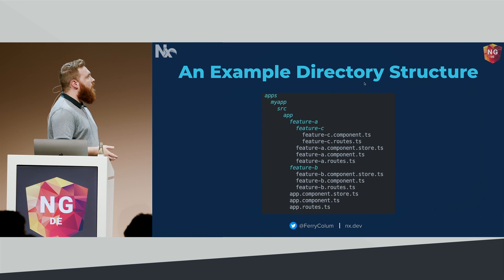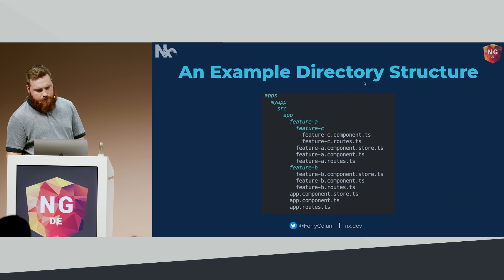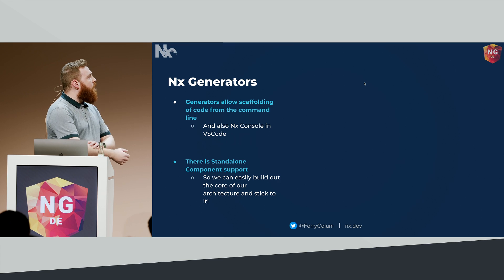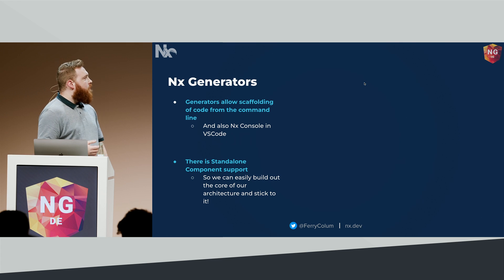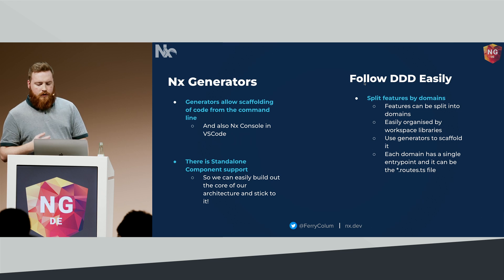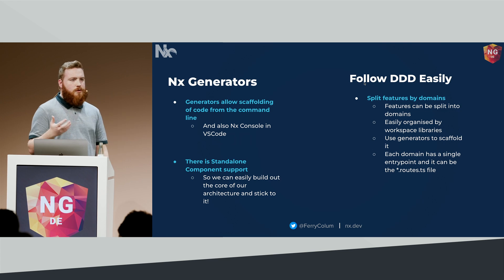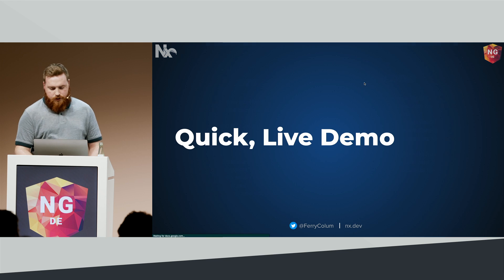Putting all these concepts together, an example directory structure would look like this. Going through your application, it's very straightforward to see how you'd set up your entry component to a feature, the routing throughout your feature, and where the management of data is happening. NX can help with this. NX offers generators that allow scaffolding of code from the command line, or if you prefer a GUI, there's the NX console in VS Code. There's also standalone component support with NX now, so we can easily build out that core architecture. NX also makes it a lot easier to follow domain-driven design — features can be split into domains, those domains into workspace libraries, and those libraries can be generated using the library generator.